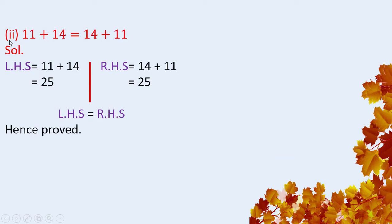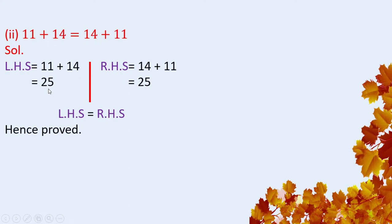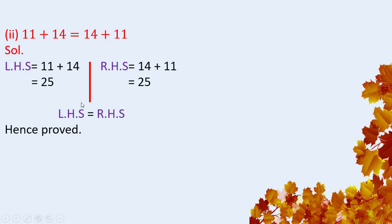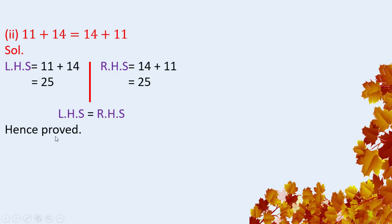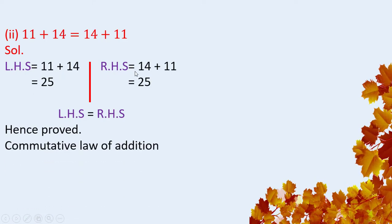The second part is 11 plus 14 equals 14 plus 11. Left hand side: 11 plus 14 equals 25. Right hand side: 14 plus 11 equals 25. Left hand side is equal to right hand side. Hence proved. You can see that the result remains same by changing the order. This is the commutative law of addition.